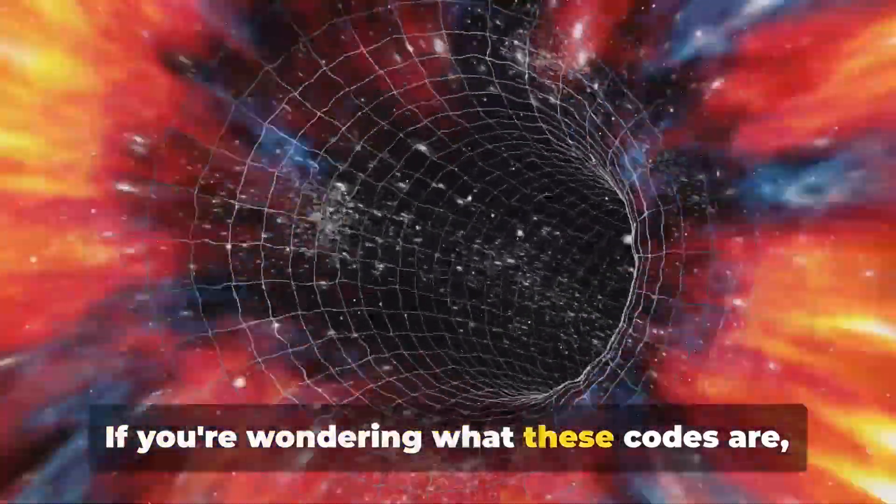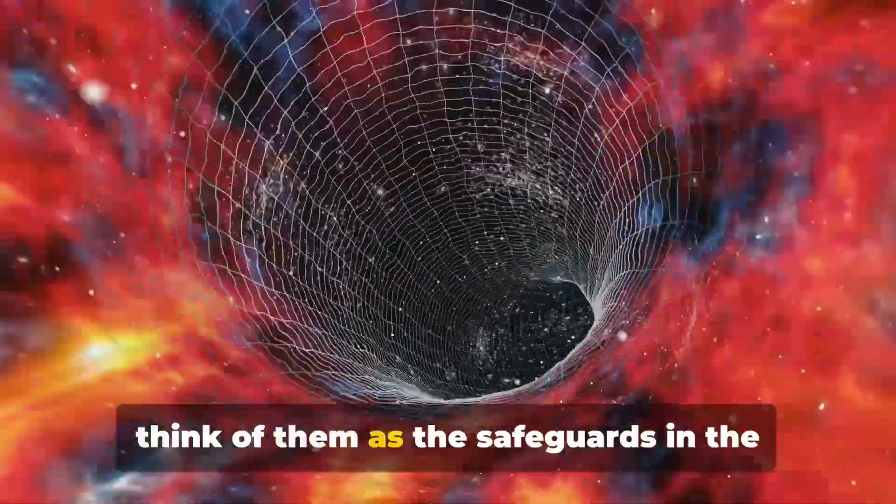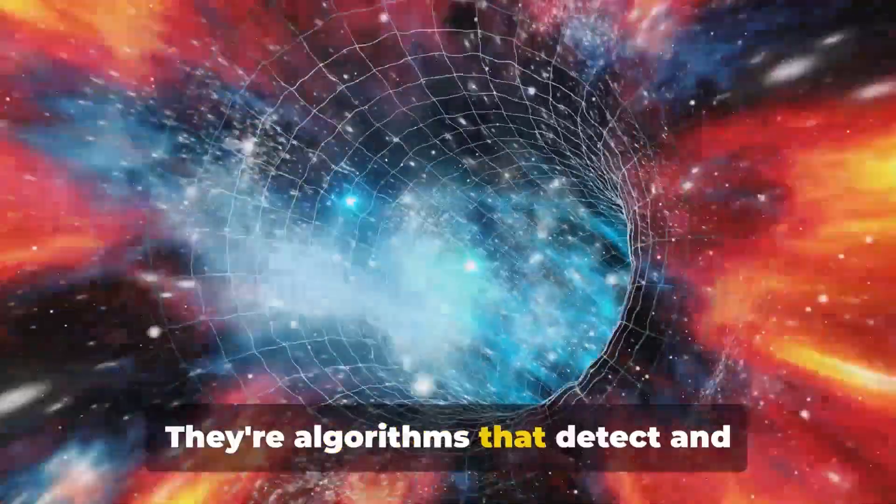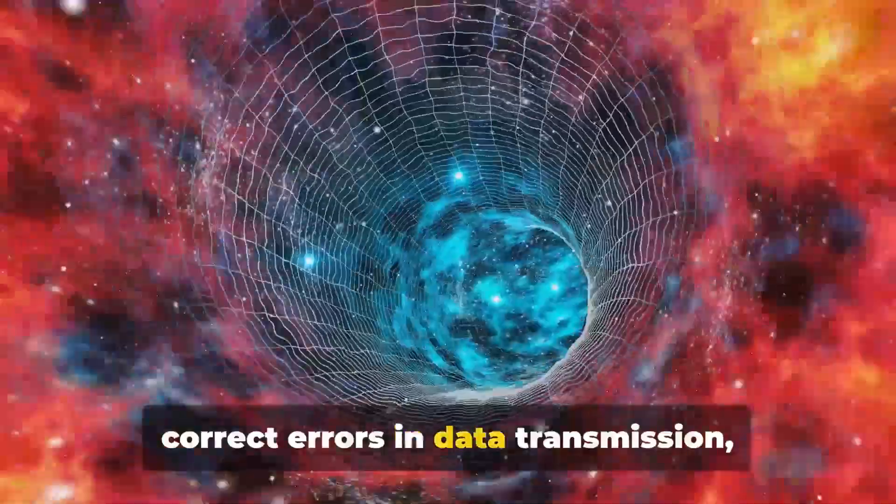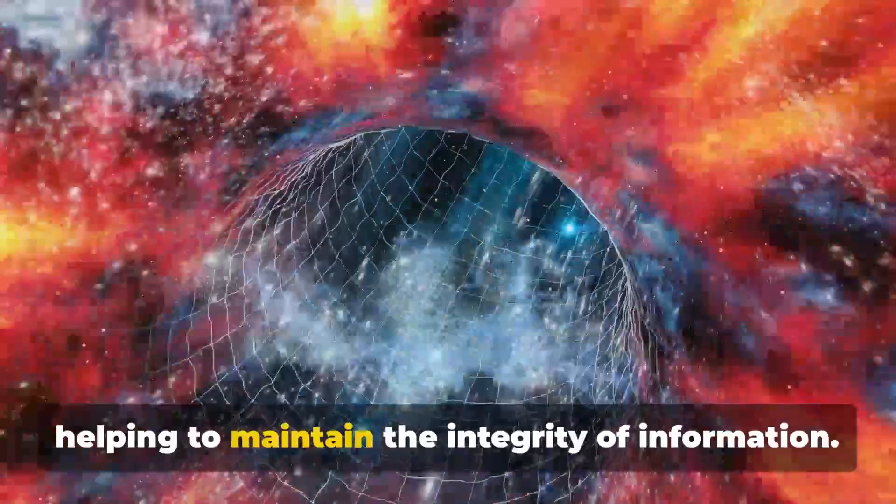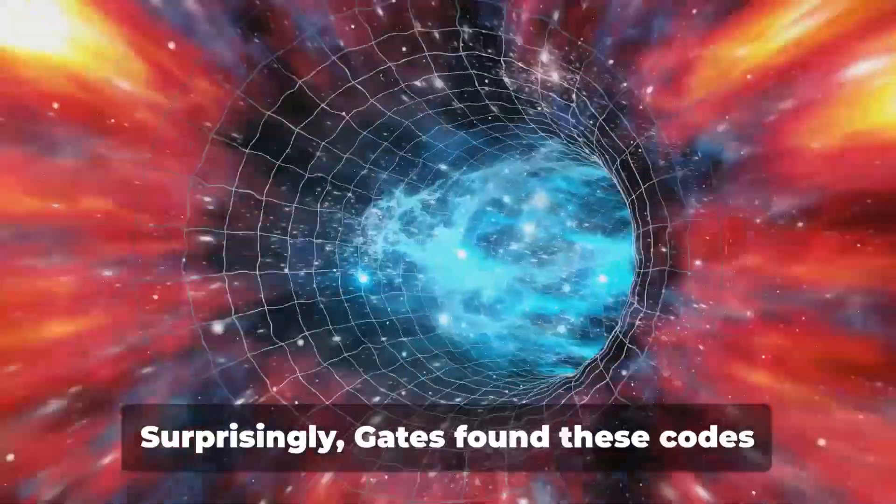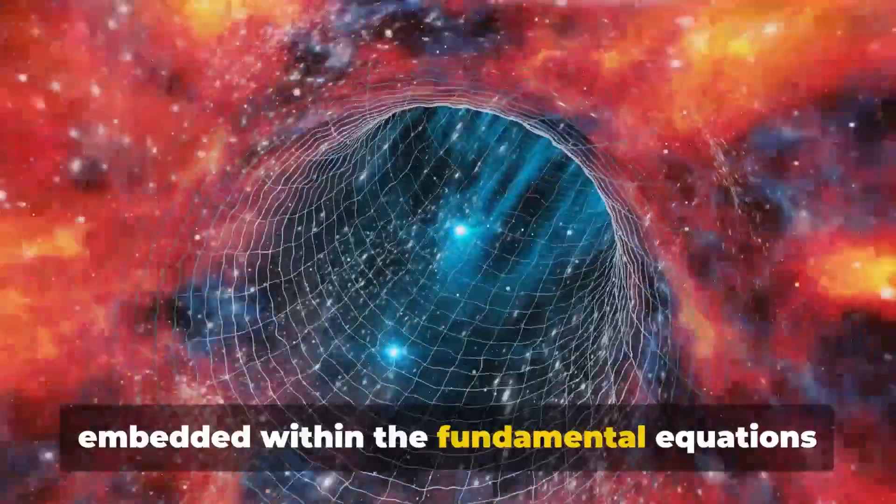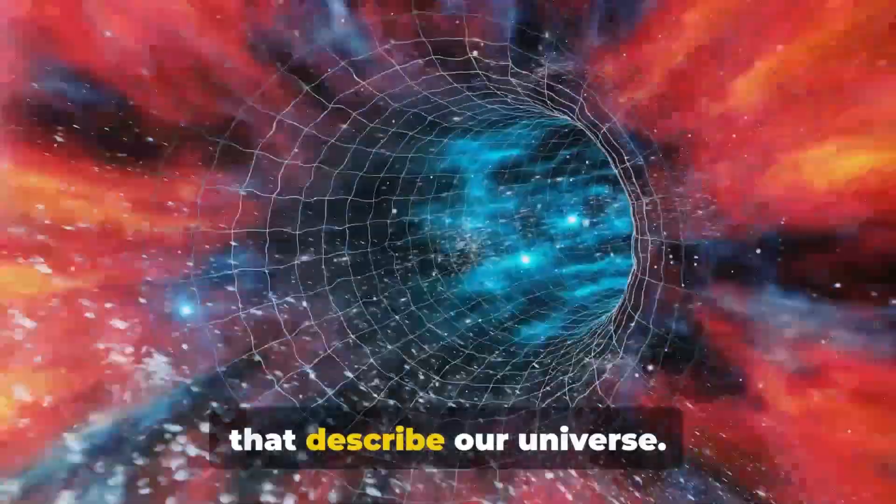If you're wondering what these codes are, think of them as the safeguards in the digital world. They're algorithms that detect and correct errors in data transmission, helping to maintain the integrity of information. Surprisingly, Gates found these codes embedded within the fundamental equations that describe our universe.